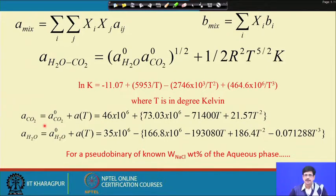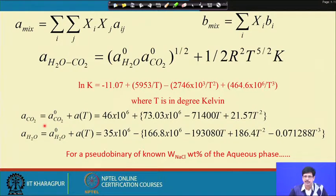We will continue discussing this method of determining density and the isochore for the mixed aqueous carbonic inclusion from the partial homogenization of the carbonic phase, the W(NaCl) of the aqueous component, and reproducible total homogenization data — verifying that when cooled the inclusion returns to its original configuration. We will continue in the next class. Thank you.